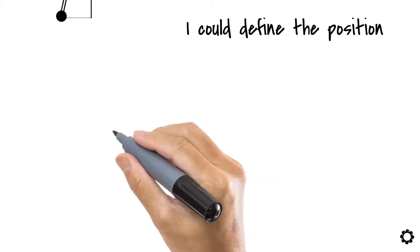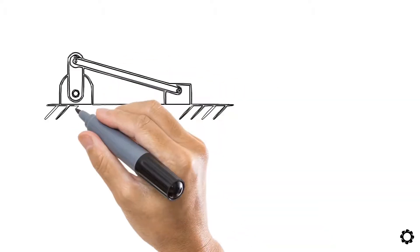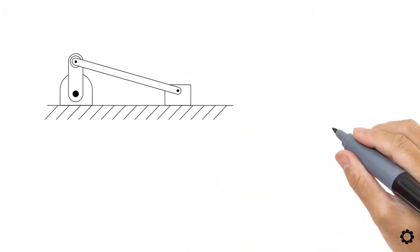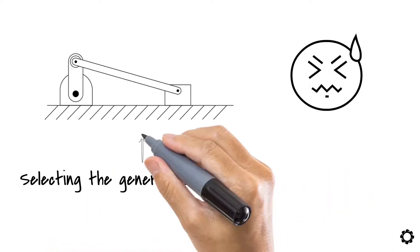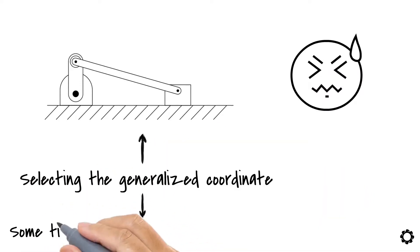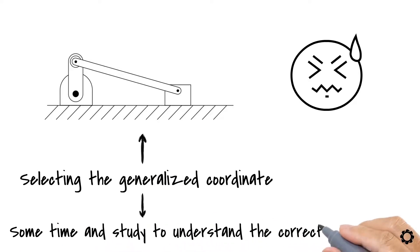However, if you have a multibody system consisting of many bodies, this task could result in a headache. You see, selecting the generalized coordinate on an intricate multibody system requires some time and study to understand the correct degrees of freedom left in each one of them.